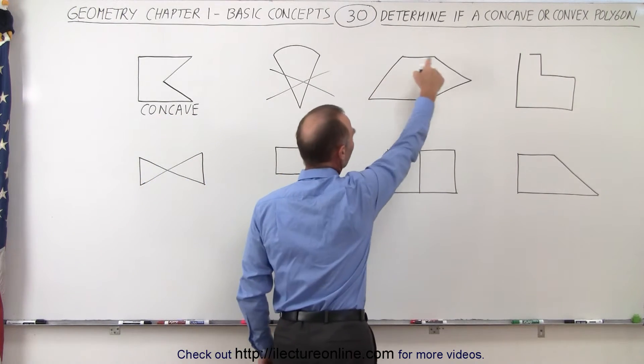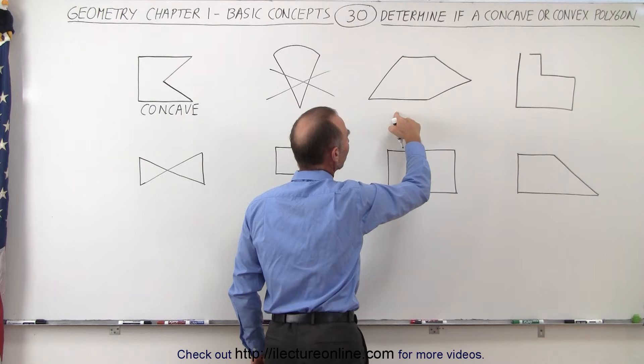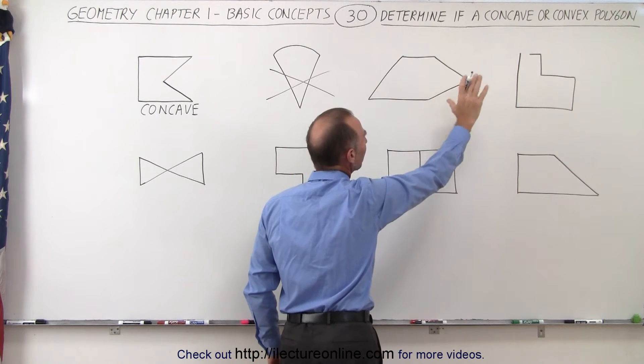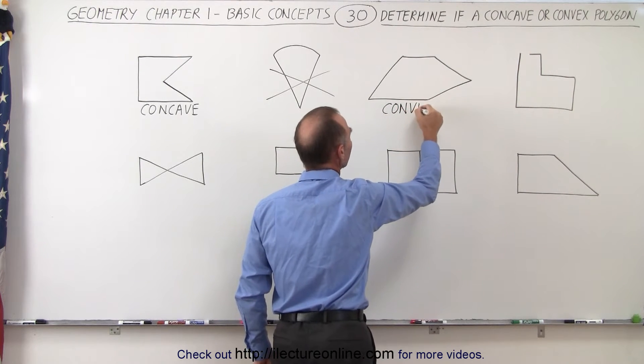Here we do have a polygon. Those are all straight line segments, and since we don't have any cave-in, we call this a convex polygon.